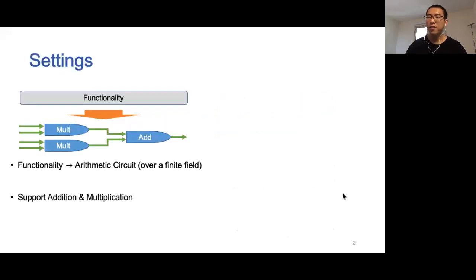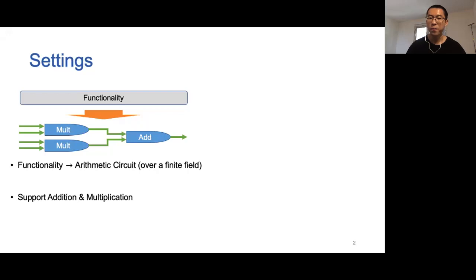Multiparty computation allows several mutually distrusted parties to evaluate a function on their private inputs. It guarantees that the protocol execution does not leak anything about the individual inputs beyond what can be inferred from the function output. Usually, the functionality is represented as a circuit, and in particular, here we choose to use an arithmetic circuit over a finite field.